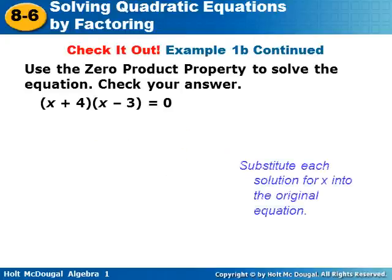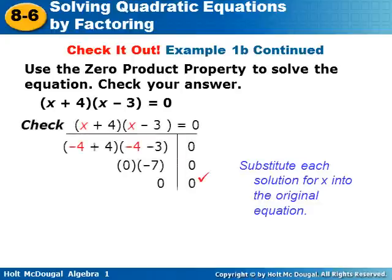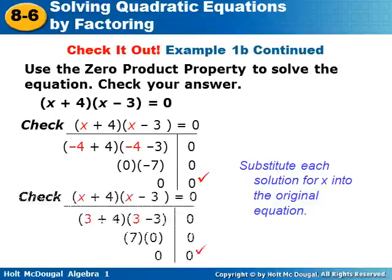We check by substituting each solution back into the original equation. For negative four: negative four plus four times negative four minus three gives zero times negative seven, so zero equals zero. For three: three plus four times three minus three gives seven times zero, so zero equals zero.